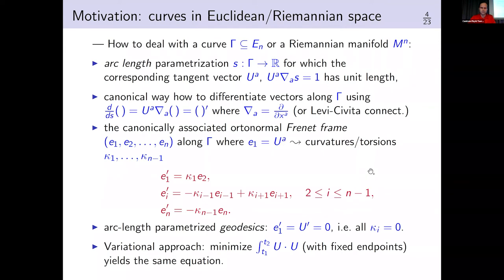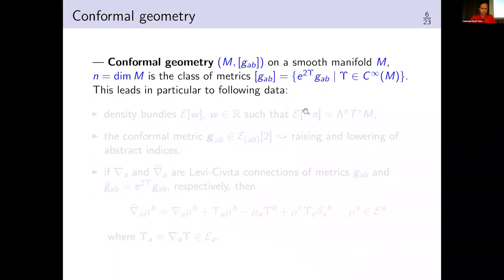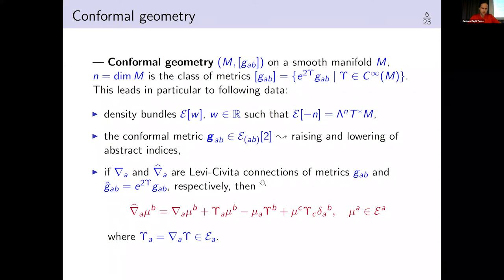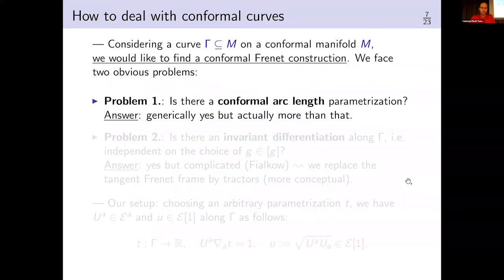The Euclidean case is essentially the same setup in the conformal setting. Here I can go quickly because we heard about it in several talks today. This is a conformal manifold with a class of metrics; we have the density bundles exactly as Rod introduced yesterday and used today. We have the conformal metric which is a density-valued object so we can raise and lower indices. The Levi-Civita connection for two different metrics g and g-hat transforms by a formula involving the conformal rescaling epsilon. You can forget these technical details — it's just to tell you what technicalities are behind it.